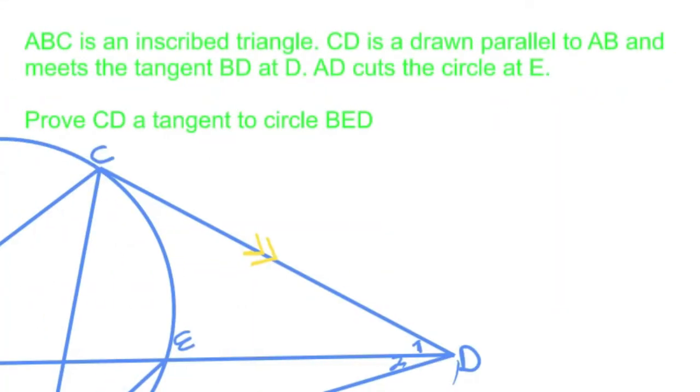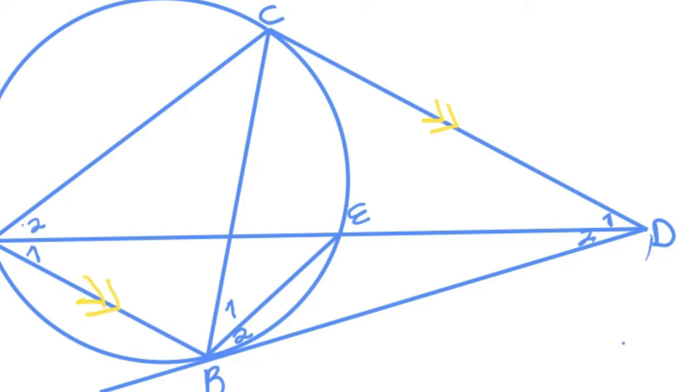So we have the question here which says that ABC is an inscribed triangle, CD is parallel to AB and meets the tangent BD at D, AD cuts the circle at E, and we are asked to prove that CD is a tangent. So we want to prove that this line that we have over here is a tangent of that triangle. So let me try highlighting it, maybe that will help matters a little bit.